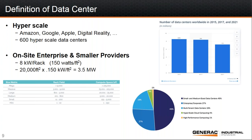Working backwards with some assumptions — at about 8 kilowatts a rack, 150 watts per square foot — if we look at a 20,000 square foot raised floor area, that's about a 3.5 megawatt load. So our focus for this discussion is really the 4 megawatt and below market, or correlating it to raised floor, 20,000 square feet and below. The small and medium sized data centers make up 49% of that total market. So there's a lot of interest in how we design backup power for these smaller applications.